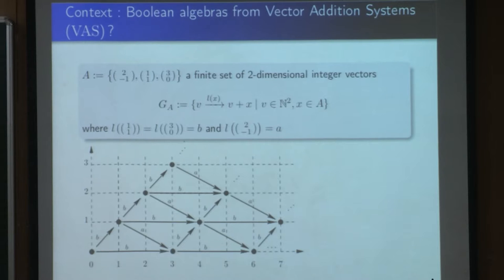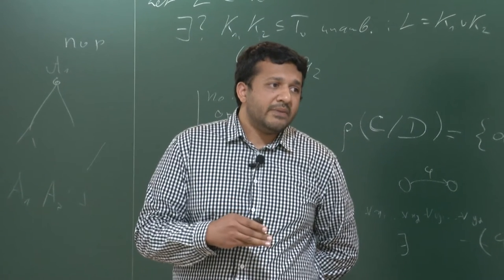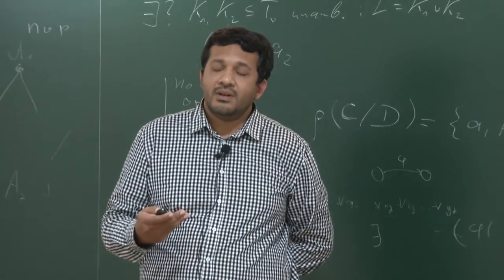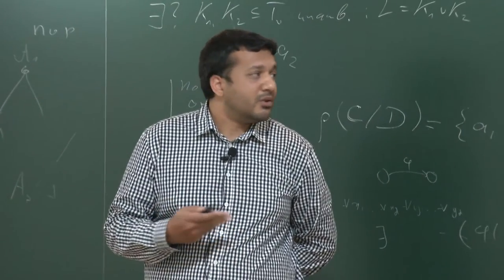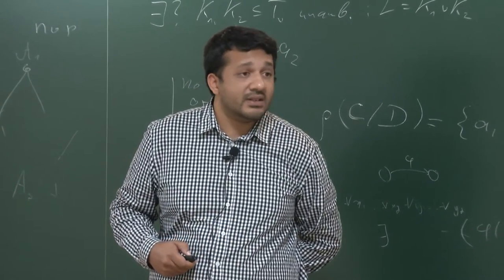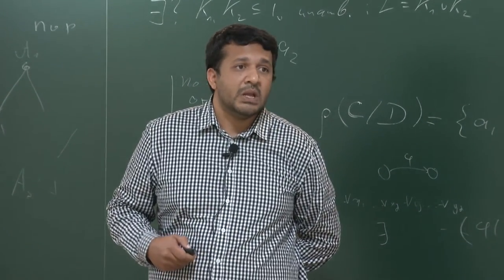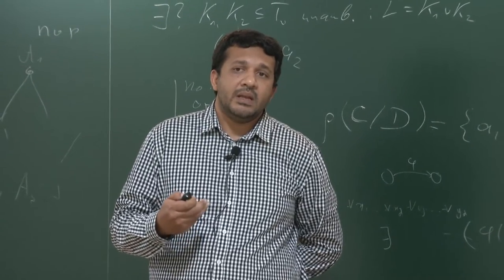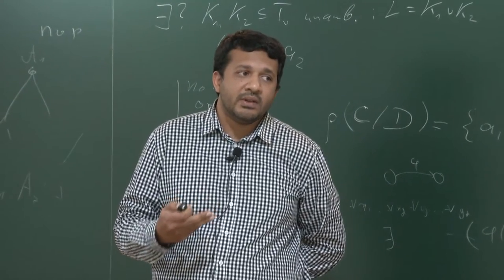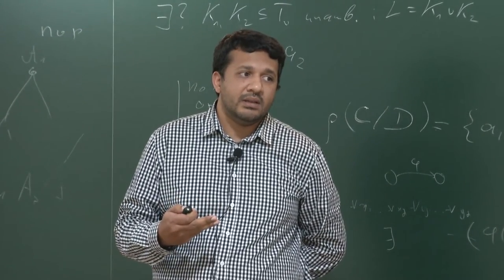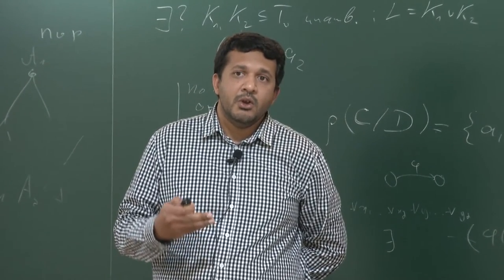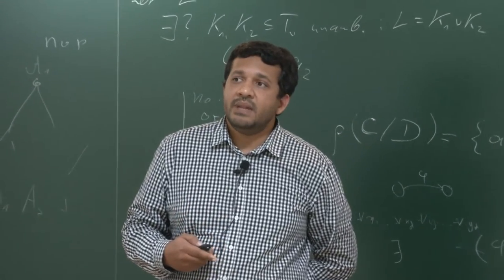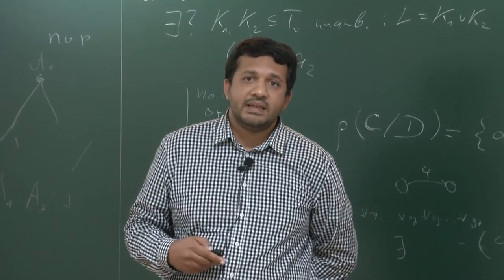On one hand we have pushdown graphs, and on the other hand we have vector addition systems. To obtain Boolean algebras and to take concurrent systems into account, we are going to consider a third model given by Mazurkiewicz traces.